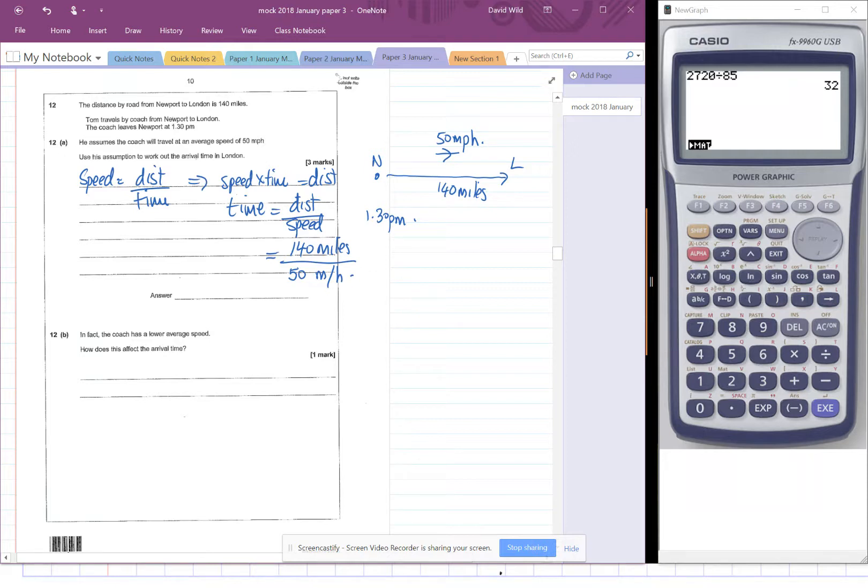Okay. So if we work that out, we're going to get 140 divided by 50, which is 2.8. 2.8 hours.